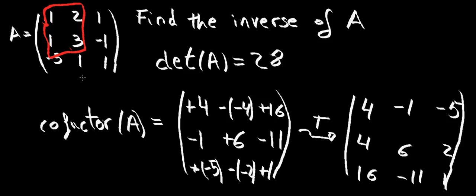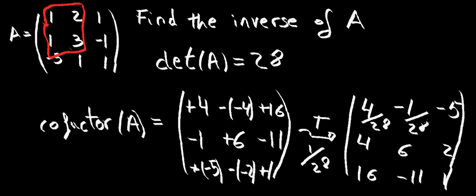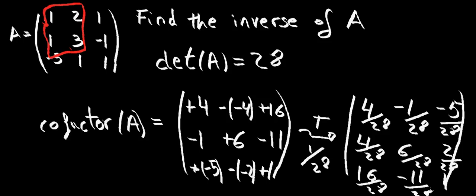Now to calculate the inverse of matrix A, we're going to divide by the determinant of A, which we calculated earlier as 28. Every element in the adjoint gets divided by 28. And this is the inverse of A.